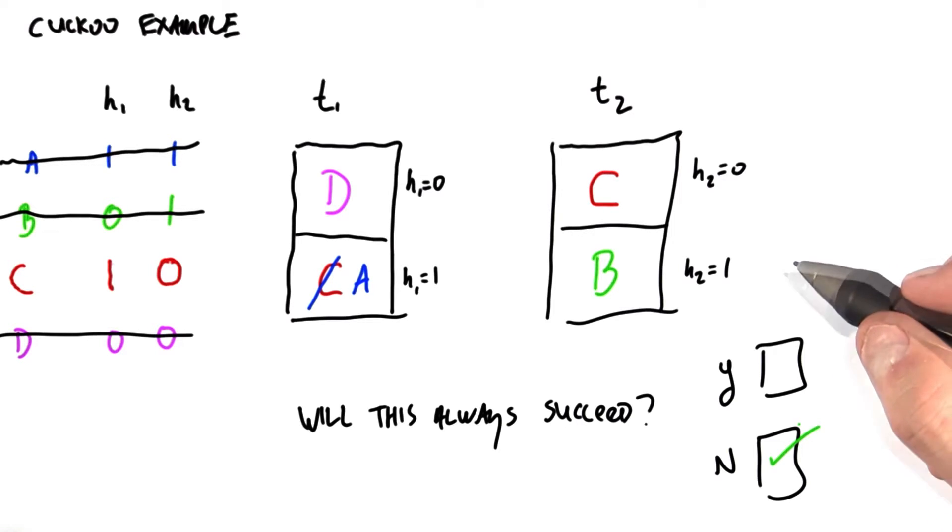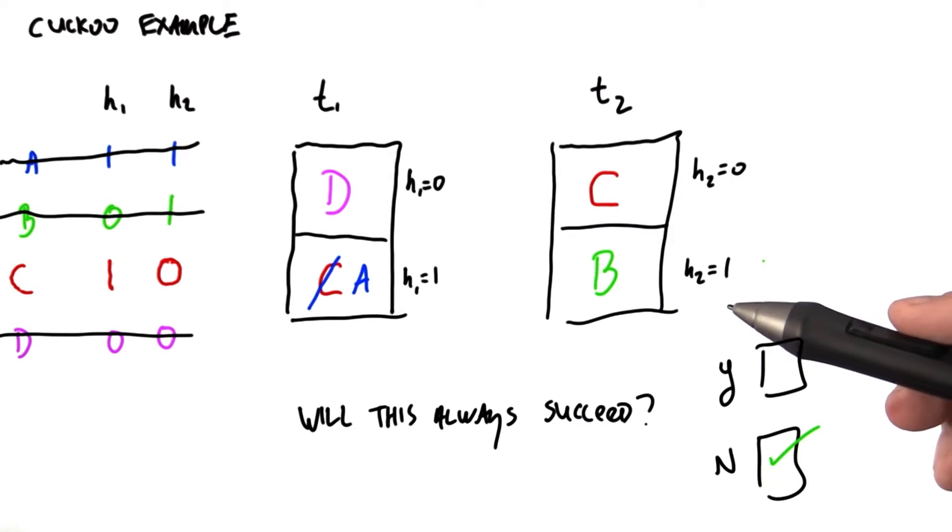No, it definitely will not always succeed. There are some nice probabilistic guarantees about how often it will succeed, depending on the size and number of the hash tables.